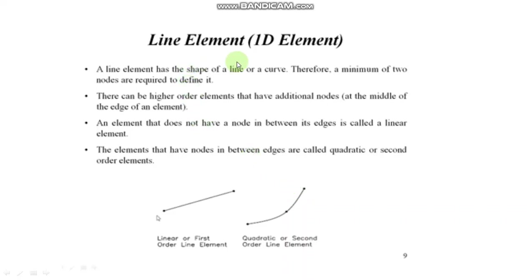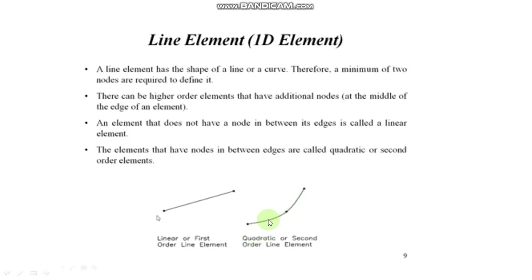First one is the line element. A line element has the shape of a line or curve. Therefore, a minimum of two nodes are required to define it. There can be a higher-order element that has additional nodes at the middle of the edge. A straight line indicates it's a linear element, and a curved line indicates it's a quadratic element. Quadratic elements have an additional node at the middle because of the curved shape.